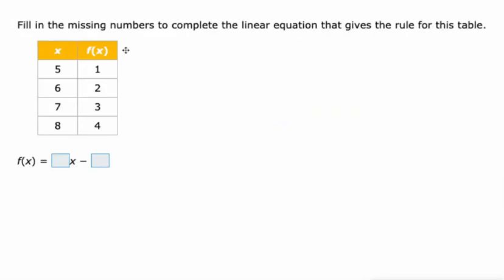So here's a table, and we're supposed to fill in these missing values, where this one in front of the x would be slope, and this would be the y-intercept here. So let's start with slope. How about what happens here? It says f of x, but that's basically our y value.